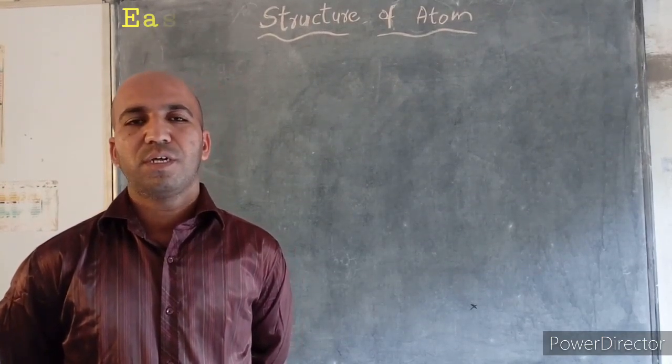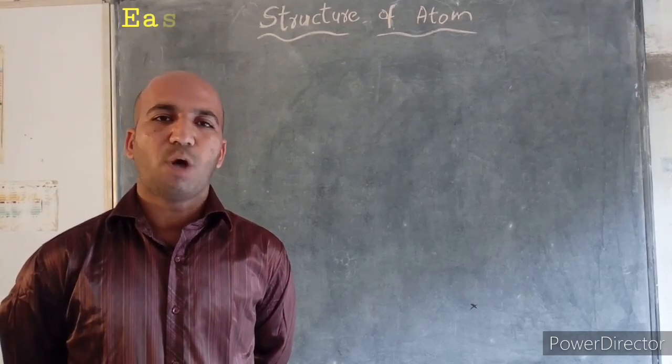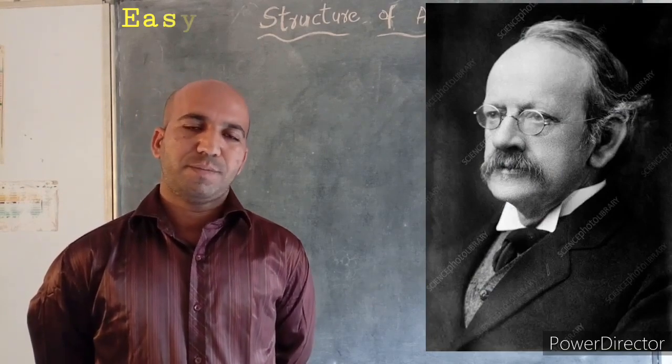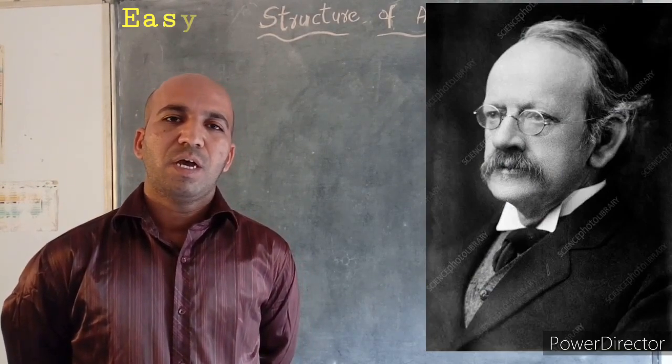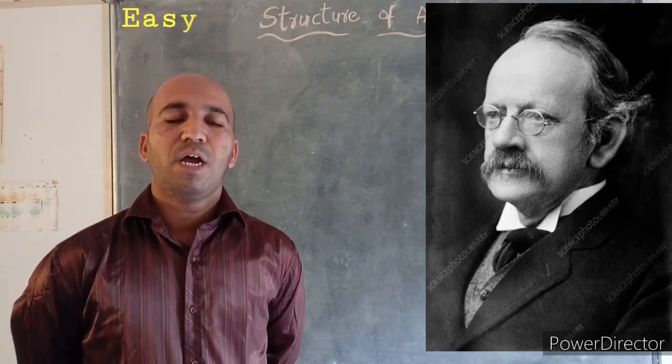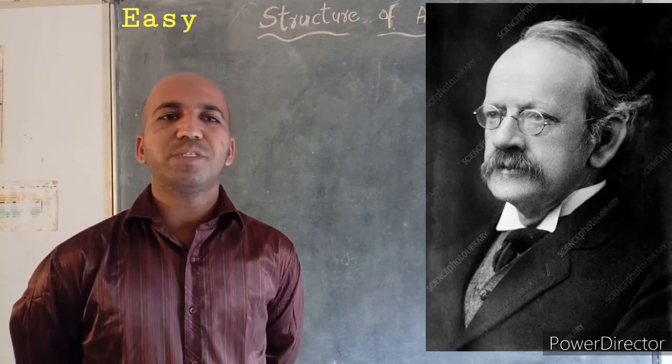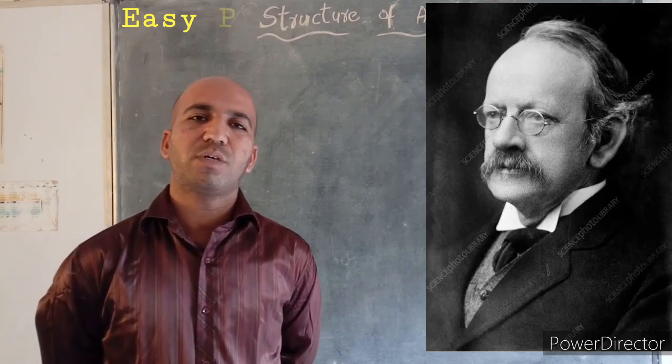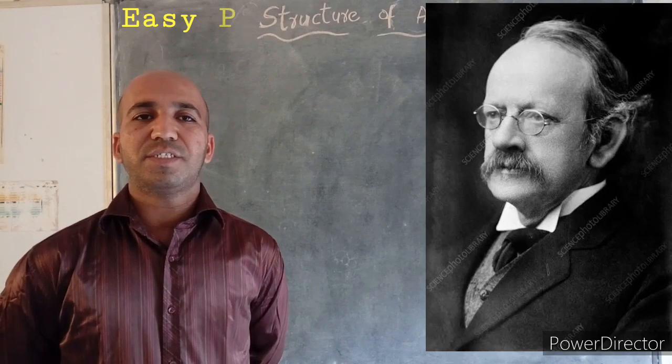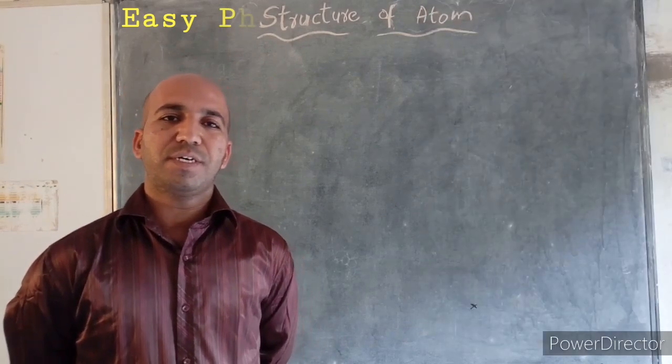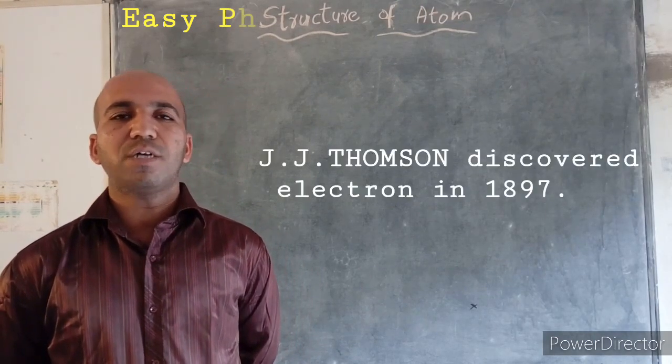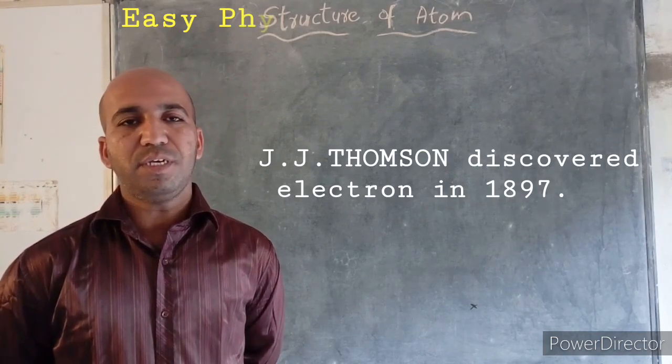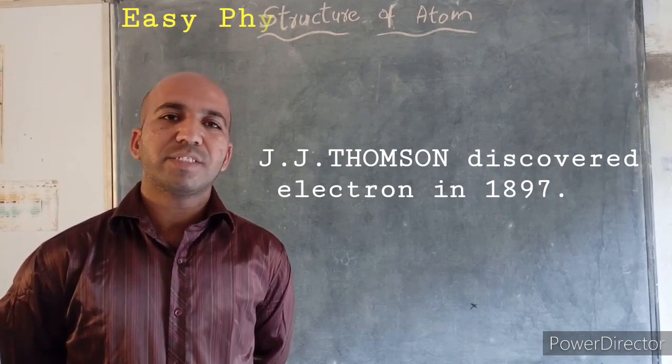First, we discuss about Thomson's atomic model. J.J. Thomson, he is a British physicist. And we know that Mr. Thomson has discovered electron, the presence of electron in an atom. In 1897, he discovered that some negatively charged particles are present inside the atom and he named these particles as electrons.